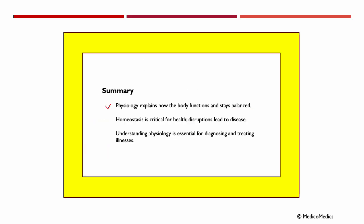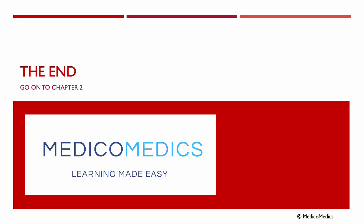In summary, physiology explains how the body functions and stays balanced. Homeostasis is critical for health, and disruptions lead to disease. Understanding physiology is essential for diagnosing and treating illnesses. That's the end of our first chapter — continue now to chapter two.